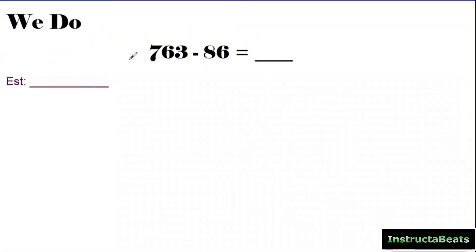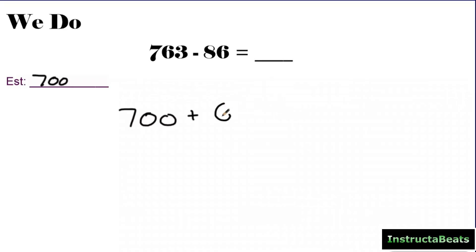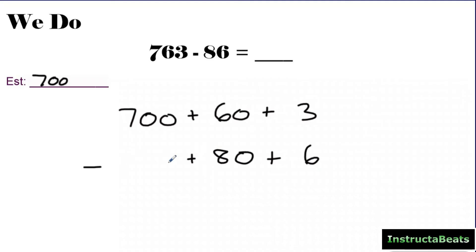Let's model this together in our We Do problem. Before we start, I want to estimate to see if my answer is reasonable. I'm going to round this to 800 and round this to 100 — so 800 minus 100, I think my answer should be around 700. That's my estimate. So let's follow our steps: first, write our numbers in expanded form and line the place values up vertically. The plus signs can help us line these numbers up. I like to put a 0 for the hundreds place just to make sure I'm not making an easy mistake.